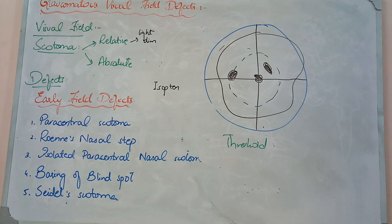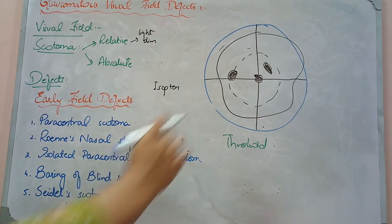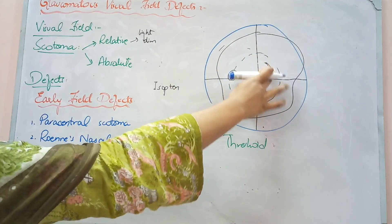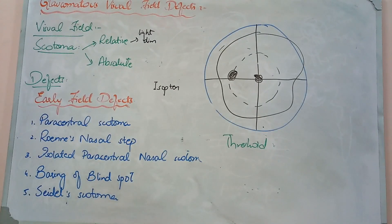I was telling you about glaucoma's visual field effects, which we had to cover as early field effects. First, what is paracentral scotoma? Paracentral scotoma is a visual field defect which is in the paracentral area. The second is Rönne's nasal step — now what is the nasal step?